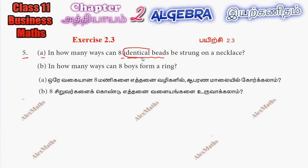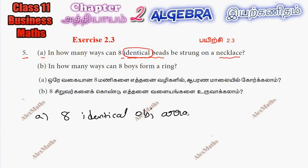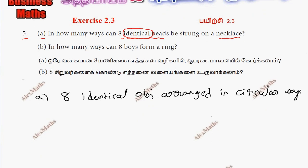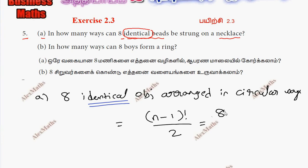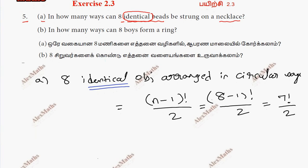The word 'identical' is key. This is a circular arrangement — stuck on a necklace. For identical objects arranged in a circular way, clockwise and anti-clockwise arrangements are the same. That is why the formula is (n-1)! divided by 2. So for 8 beads: (8-1)!/2 = 7!/2.